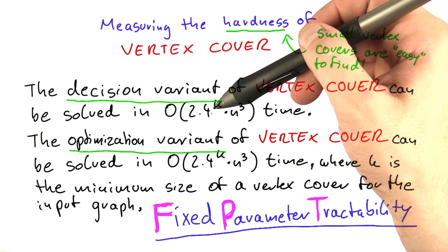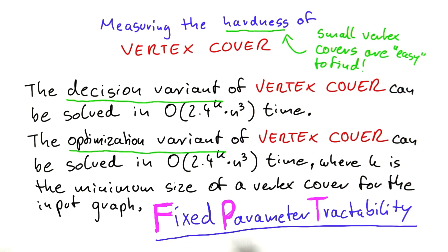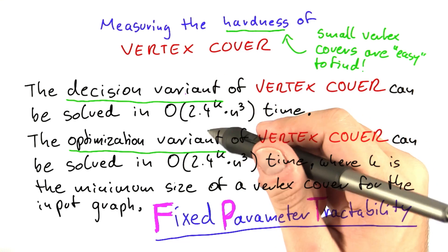If the parameter is not fixed, so for example it is some function of n, then the problem is not tractable. This is a super neat technique for solving vertex cover.